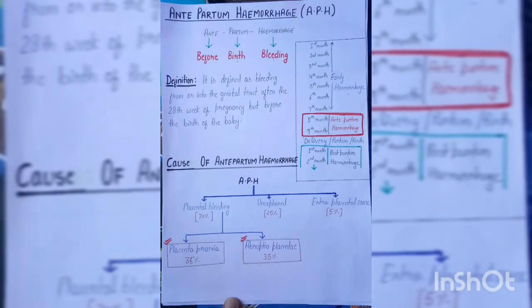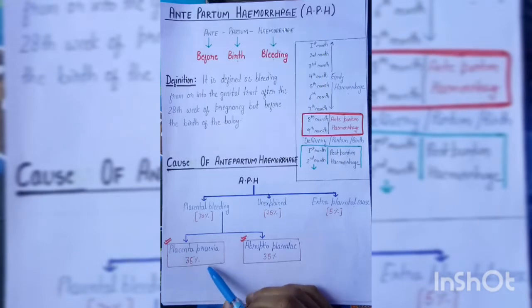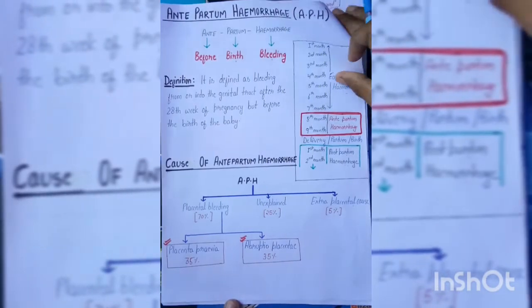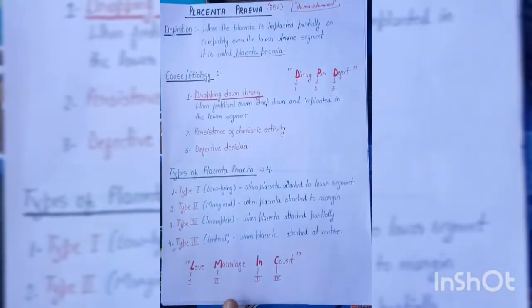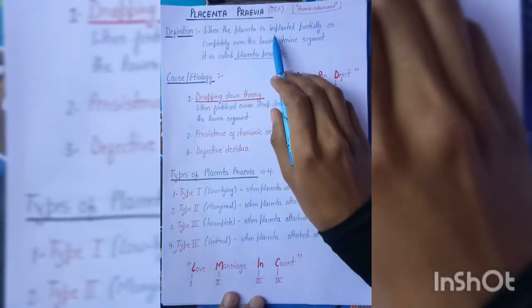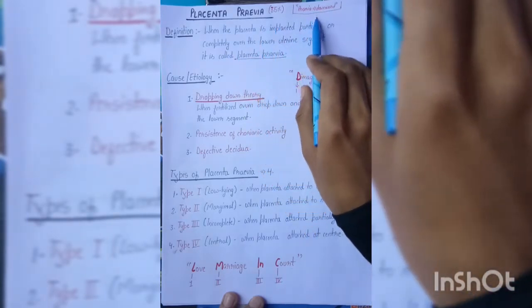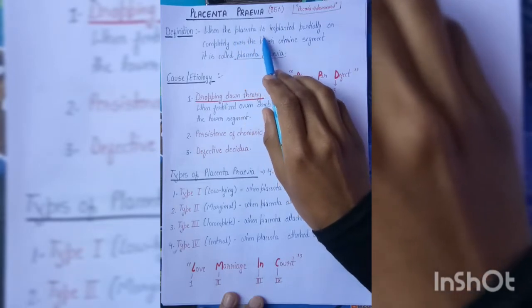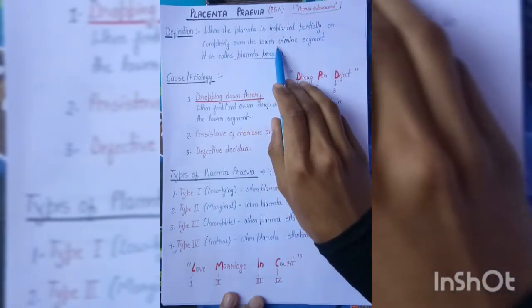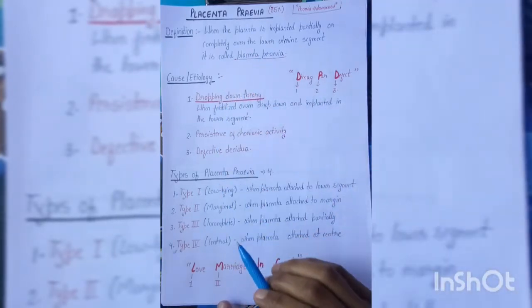For placenta previa and abruptio placenta, we will cover definition, causes, types, clinical features, and complications. 'Previa' means downward or lower segment. Placenta previa is when the placenta is implanted partially or completely over the lower uterine segment.